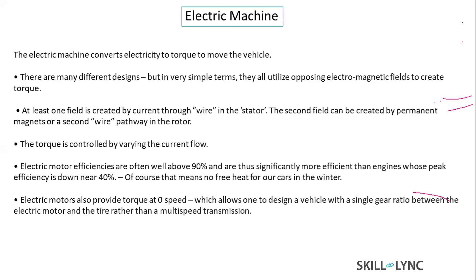Depending on the configuration and application, various types of electric machines are available. The motor houses a stator and rotor. Current is supplied to the stator, which produces magnetic flux that rotates the rotor. This induces voltage on the rotor and produces torque through electromagnetic induction. The torque produced is directly proportional to the current drawn from the motor.